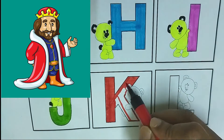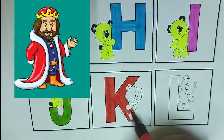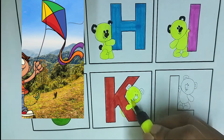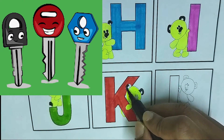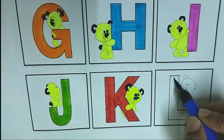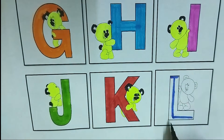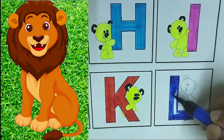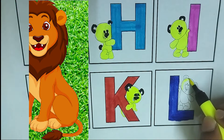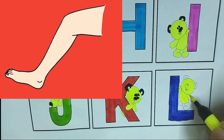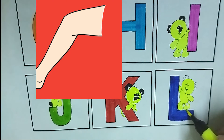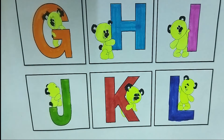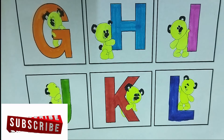K for king. K for kite — you fly kites, don't you? I fly kites! K for keys — to open doors. Next is L — repeat after me: L. L for lion. L for lake. L for lamp.